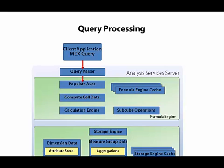If it passes, the next step is to determine what's on rows and what's on columns. What's not shown here is a request to the storage engine to get the dimension data. Setting up the axes then gives Analysis Services what it needs to get the tuple values, or the cell values, from the cube.